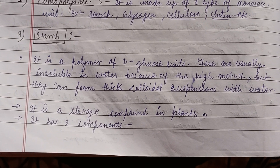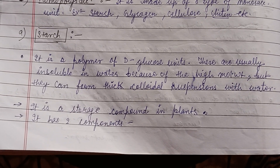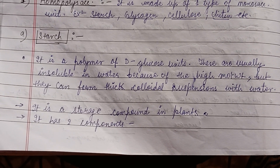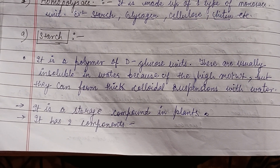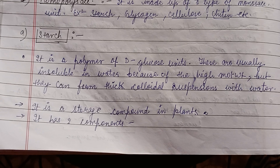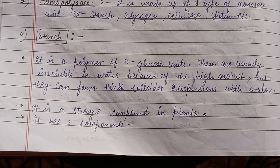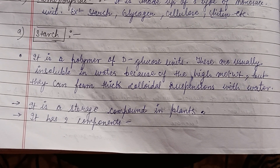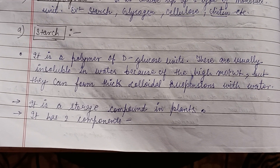Starch is a polymer of glucose units and is usually insoluble in water. It is a storage compound in plants and has two components: amylose and amylopectin.